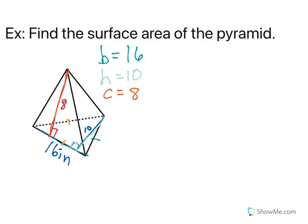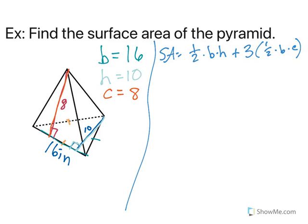Now once I have all of those pieces, then I can say, okay, I know that I'm not finding volume, I'm finding surface area. It's one-half base times height plus three times one-half base times C. I need that three because there are three equal sides.